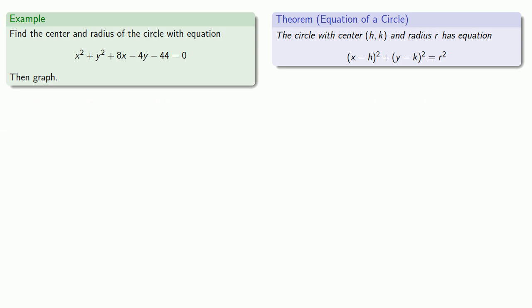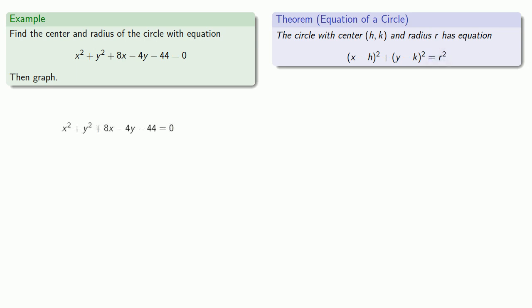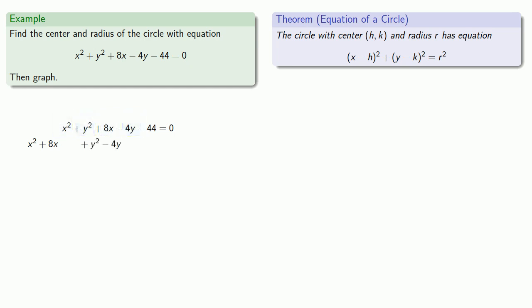Looking at the standard equation, all x terms are together, all y terms are together, and all constants are on the right-hand side. So let's rearrange the given equation so that we have all x terms together, all y terms together, and move the constant onto the other side of the equation.